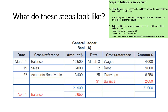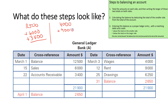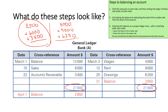So what do these steps look like? We can see here on this example of the general ledger for bank that we've got those three steps in play. What the person has done here is totaled both sides of the bank account by adding them — 12,500 plus 6,000 plus 3,400 on one side, and 4,000 plus 9,000 plus 6,250 on the other. The larger of those sides is the amount written down. It's important that the same amount is written on both sides — we choose the larger of the two amounts and put it on both sides.